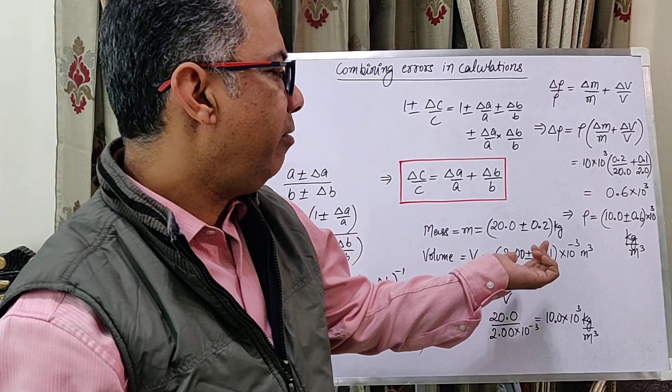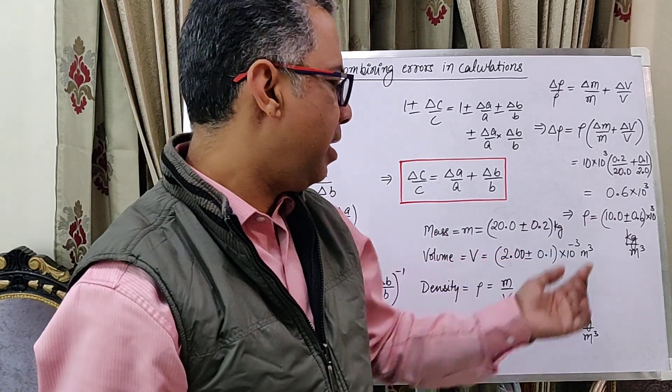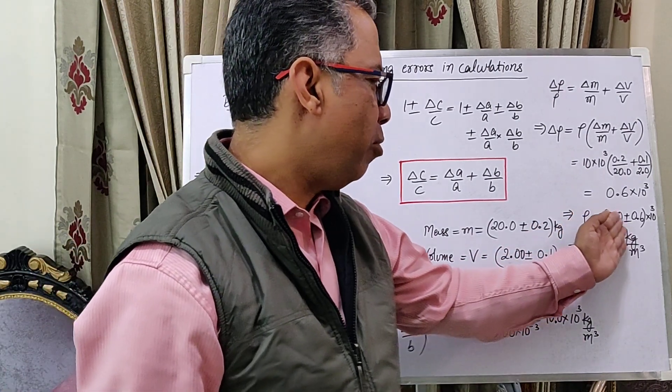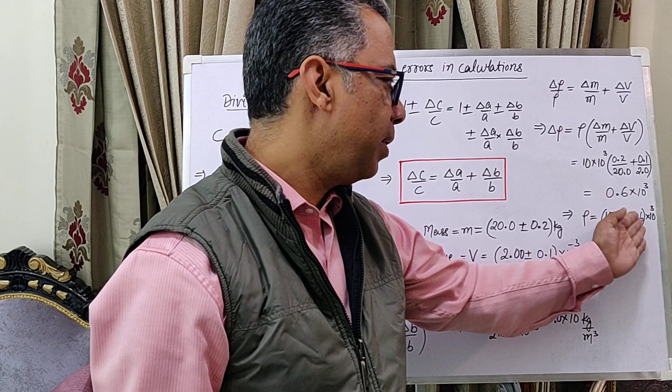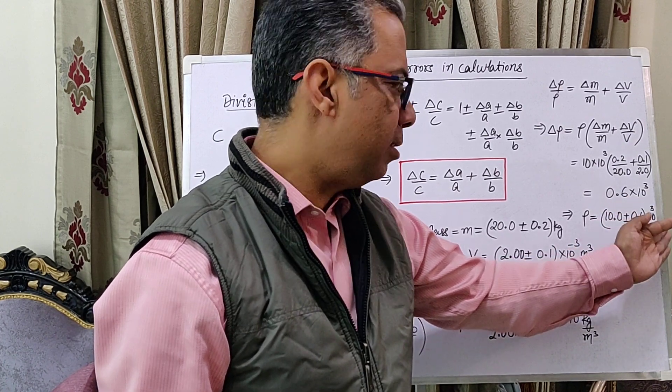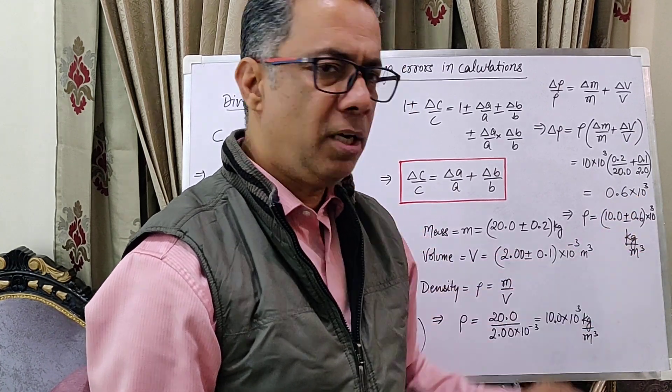And therefore, now finally, we represent density as 10.0 plus minus 0.6 times 10 raised to the power 3 kg per meter cube.